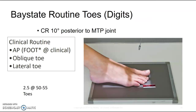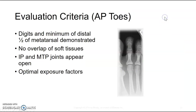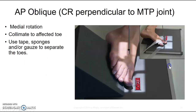Know your anatomy. For toes: if you get an order for a toe, at our clinical site we routinely do an AP foot to include all the toes, an oblique of the specified toe, and a lateral of the specified toe. We would do the foot as normal with a 10-degree angle. Your textbook identifies centering to the toe itself — important for boards. For the oblique toes, put the foot in medial oblique rotation, similar to the oblique foot.